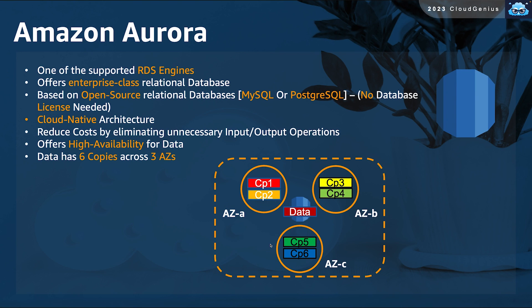Amazon Aurora is an enterprise-class relational database based on an open source database, which means no database license is needed. It's designed to give you the best performance and the highest type of availability for your data on the cloud. Every single piece of data written is going to be copied six times across three different availability zones, as shown in the diagram.